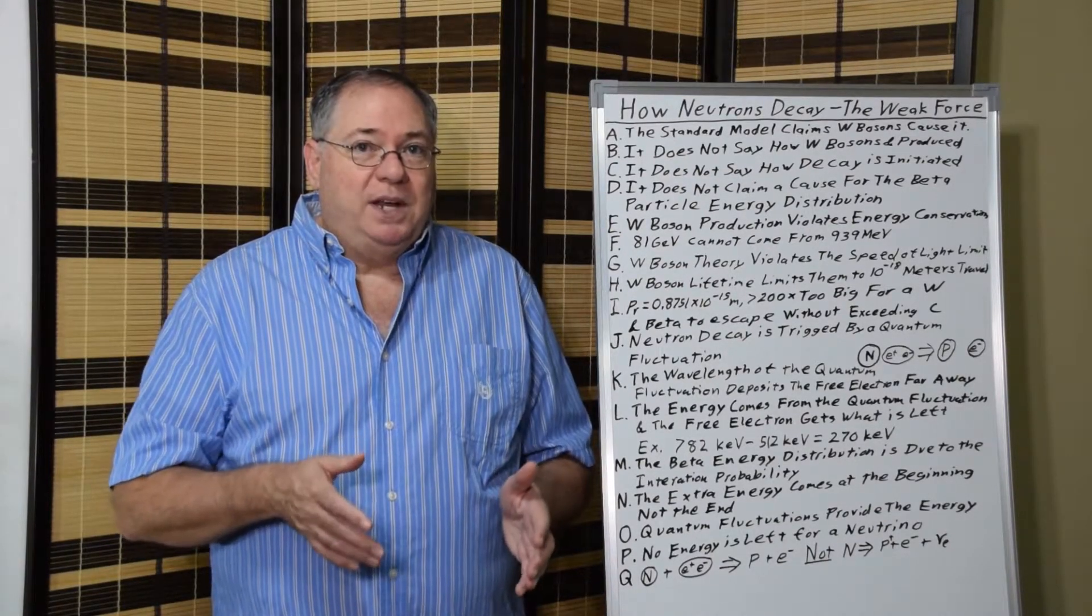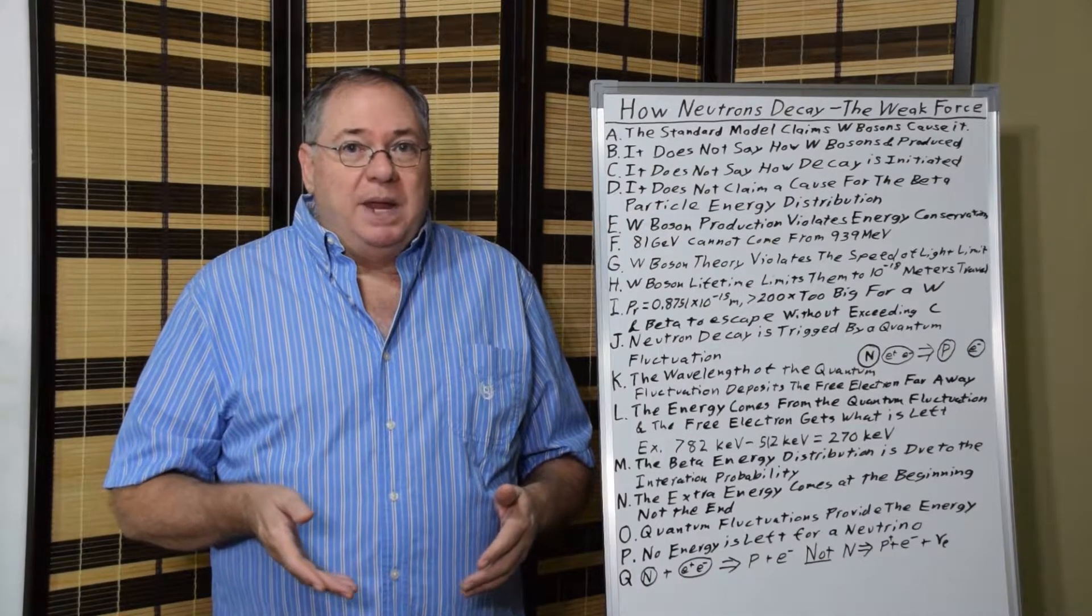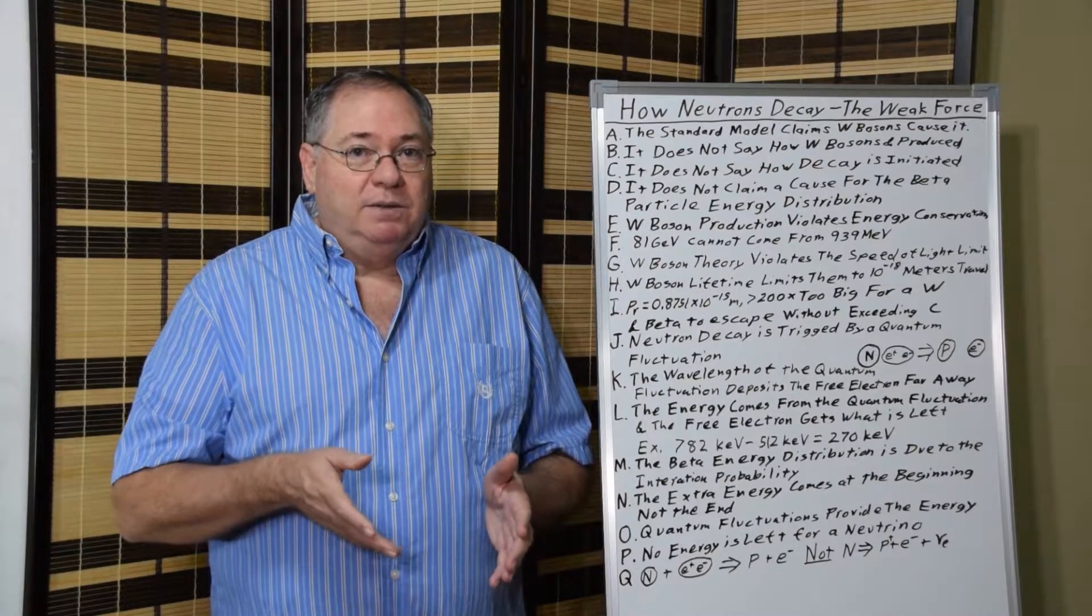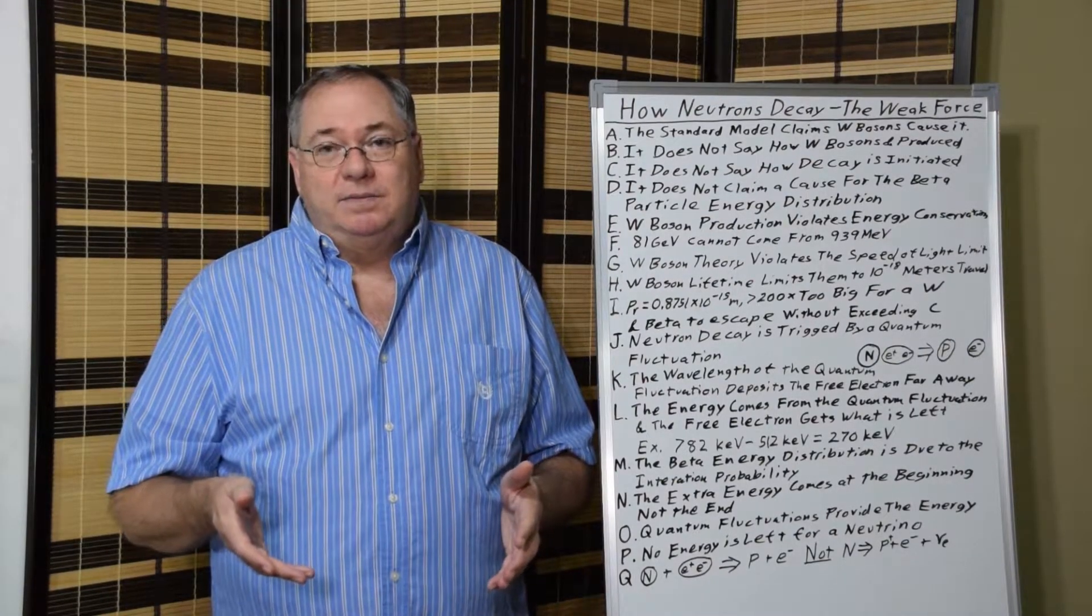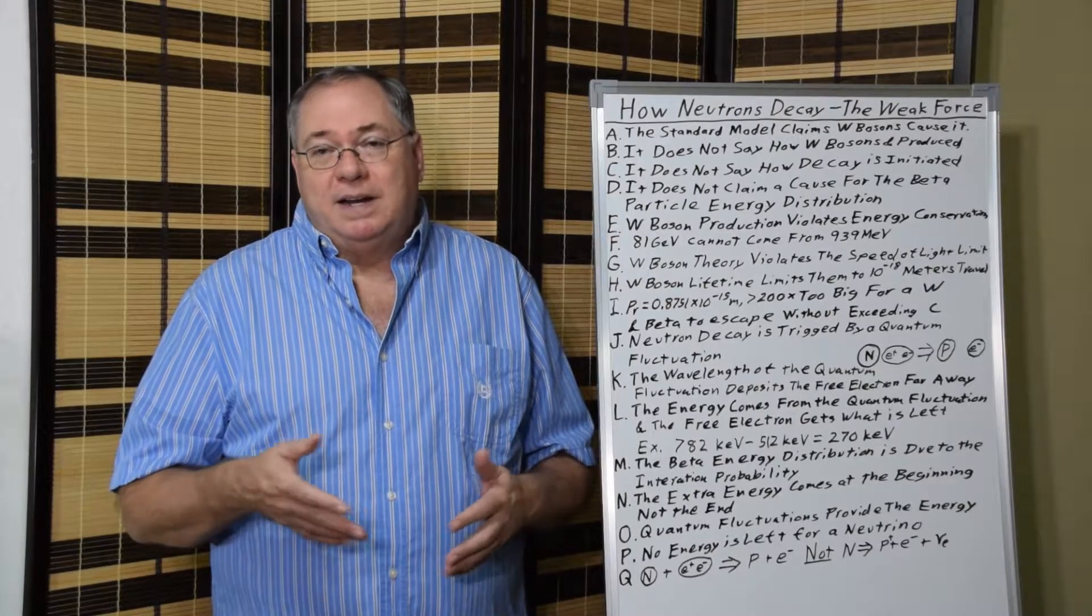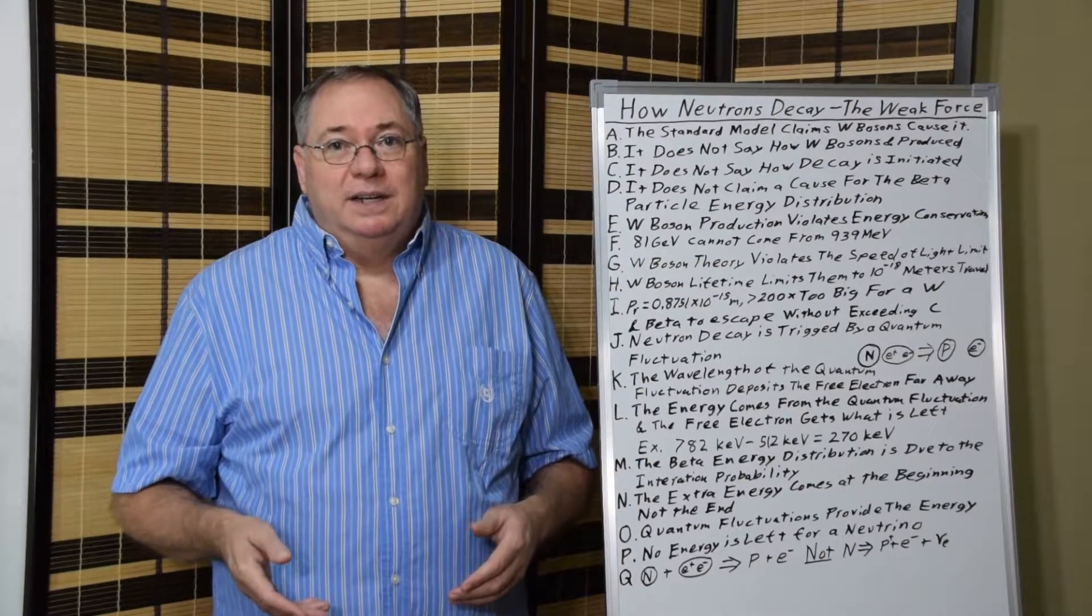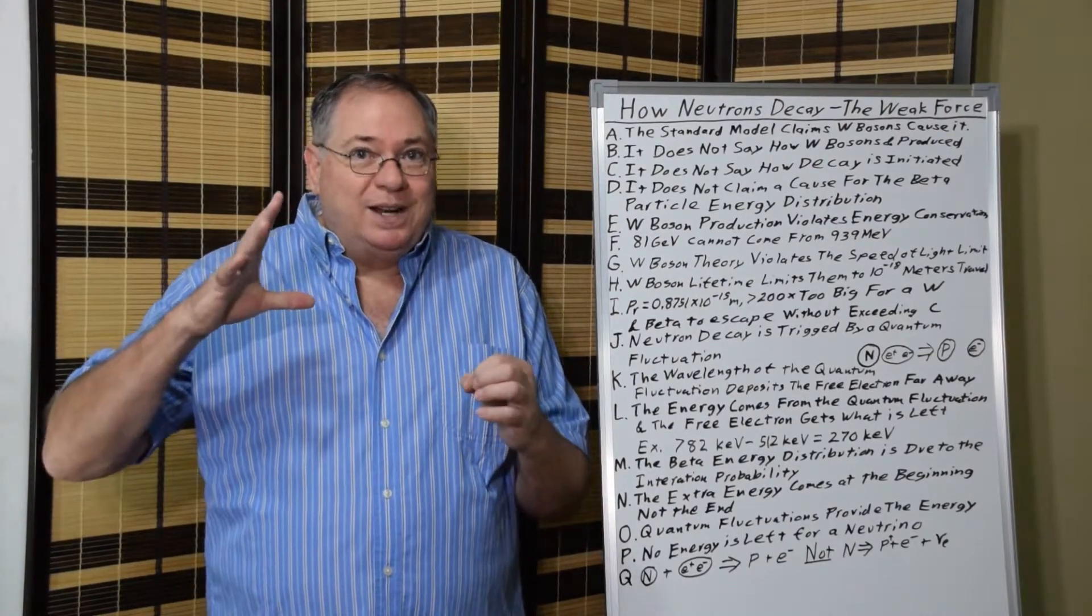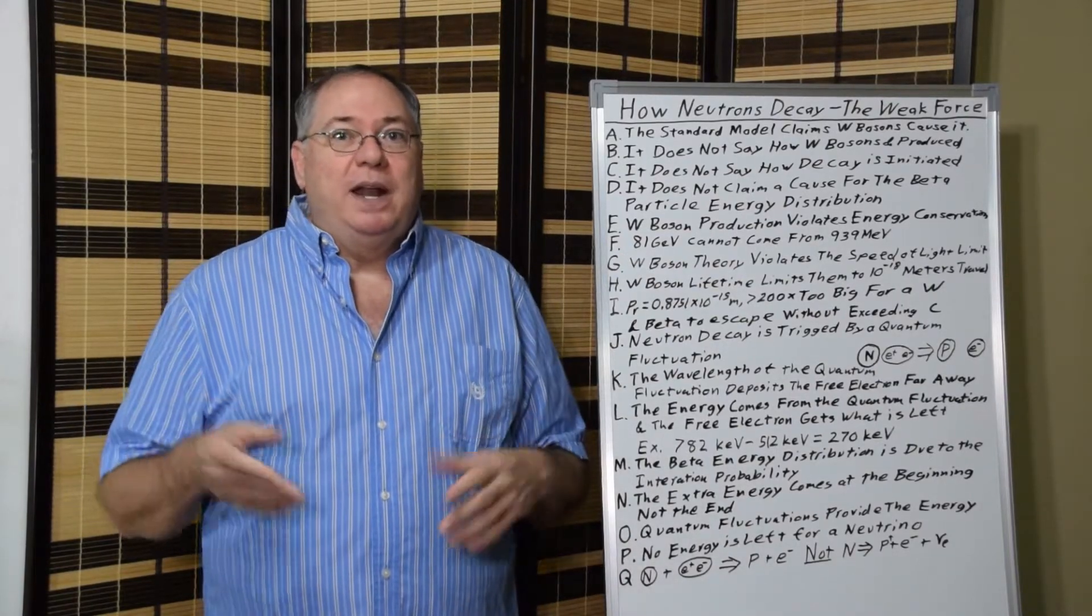And even the mean lifetime we know of the W-boson from experiments is only slightly longer than the mean lifetime allowed under the quantum fluctuation limit. So, either way we look at it, the W-boson range is sort of short, being 10 to the minus 18 meters versus the proton having a radius of around 10 to the minus 15 meters, which is 100 times bigger.